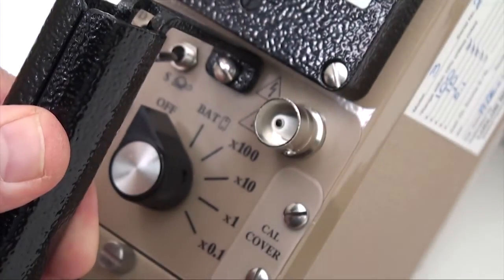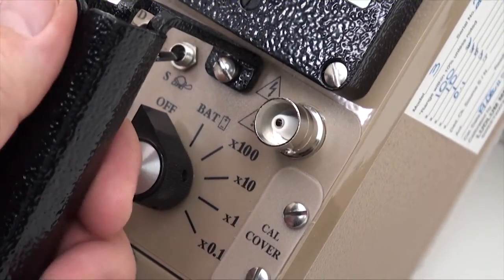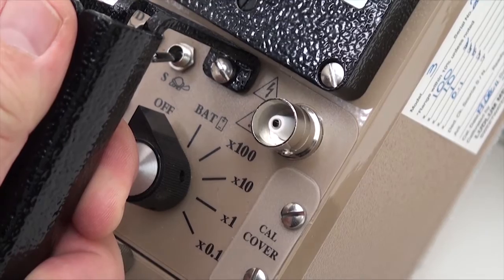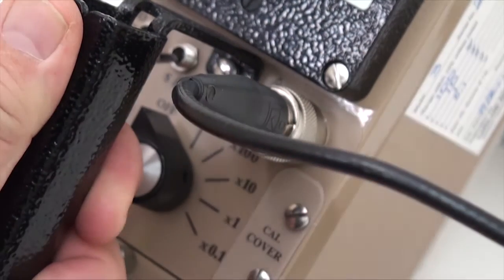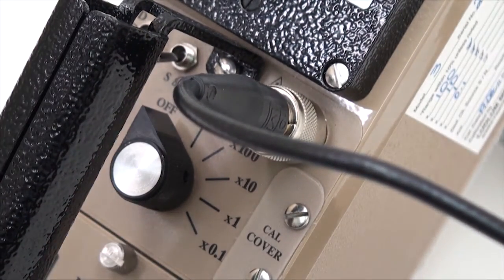The Model 3 comes equipped with a C-style connector for convenient connection to the detector cable. This connector is standard throughout Ludlum's line of survey meters and detectors, is watertight and very durable.